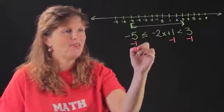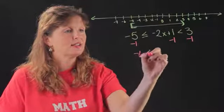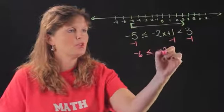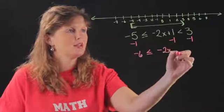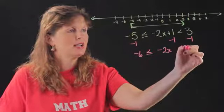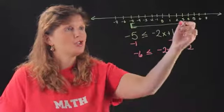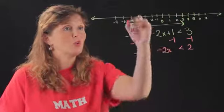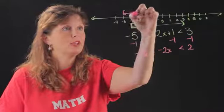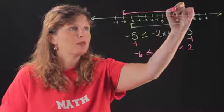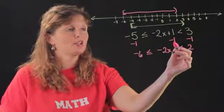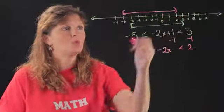So I'm going to subtract it like that. So negative 5 minus 1 is negative 6, less than or equal to negative 2x. These make 0 so they cancel, is less than 2. So what we've done is move this whole thing to here. We've actually shifted to the left one unit.